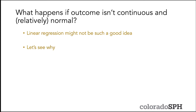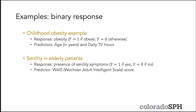What do you do if your outcome isn't continuous and relatively normal? In that case, you might not be able to use linear regression. One example we'll work with a lot is binary responses — values that take on zero or one. For example, childhood obesity where Y equals one if the child is obese and zero otherwise, with predictors like age or daily hours watching TV. Another example is senility in elderly patients, where the response is presence of symptoms of senility — one indicating symptoms are present, zero otherwise — and the predictor of interest is an adult intelligence score.